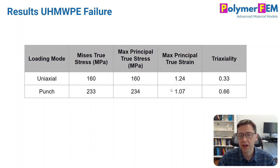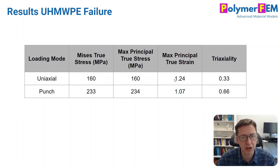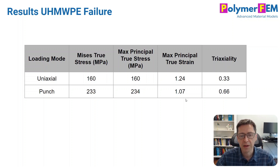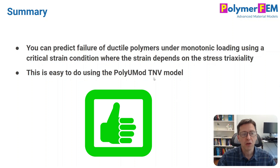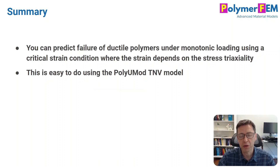This brings up the idea of triaxiality. My recommended approach is to use a strain-based failure condition, but have the critical strain value depend on the stress triaxiality. Yes, you do need to measure these critical strain values for different triaxialities — but if you do that, you can predict failure under those conditions and other conditions too. Using the PolyuMod TNV model, you can also plot safety factors. If you are predicting the ductile behavior of polymers under monotonic loading, using a strain-based condition with the critical strain depending on stress triaxiality is really powerful and allows you to predict the response very well all the way up to failure. That is probably the best approach I would recommend today.